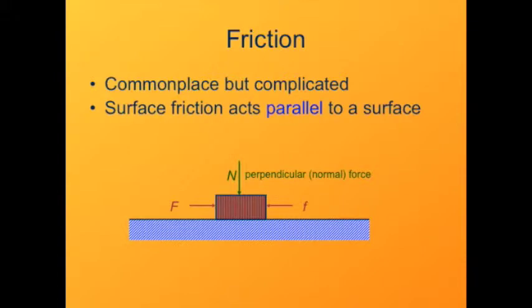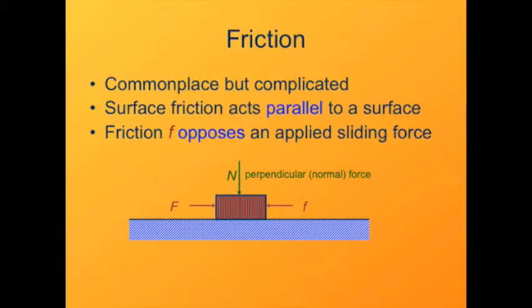Friction acts parallel to a surface. The force of friction — the small f — is going to oppose any applied sliding force. So here, if we've got a force, capital F, pushing to the right, the force of friction would oppose that and push to the left. The normal force of an object pressing down on the surface is necessarily present whenever friction is present — in fact, that's what causes friction.